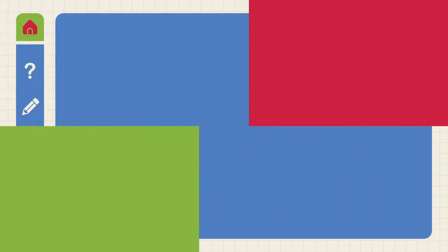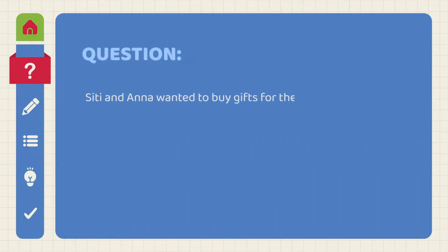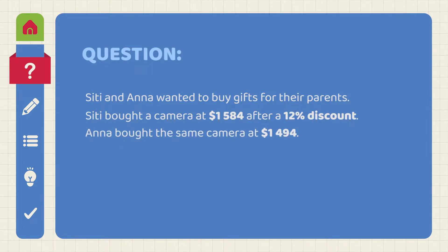Percentage. CT and Anna wanted to buy gifts for their parents. CT bought a camera at $1,584 after a 12% discount. Anna bought the same camera at $1,494. What was the rate discount given to Anna?